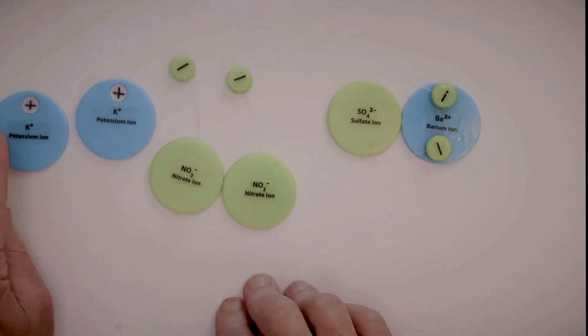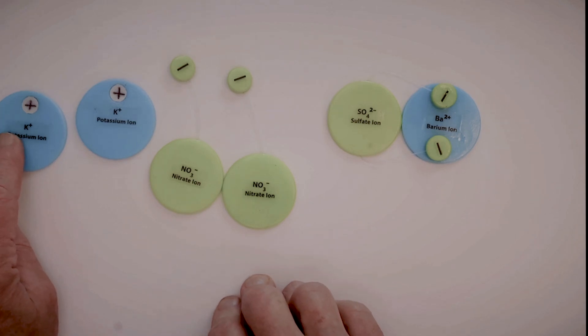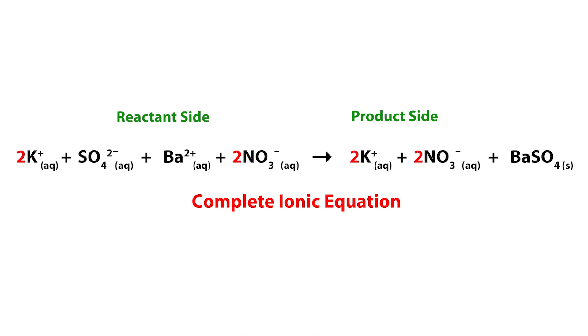You notice that the potassiums were in the solution before, and they're in the after. They're in the reactant side. They're in the product side. The same thing for the nitrate. They're on the reactant side.